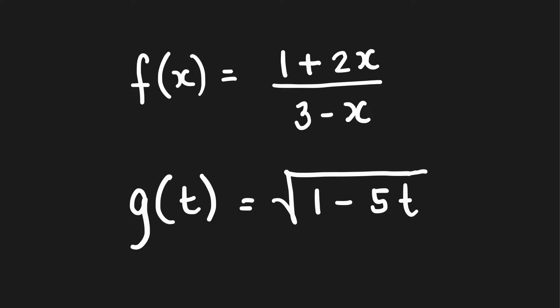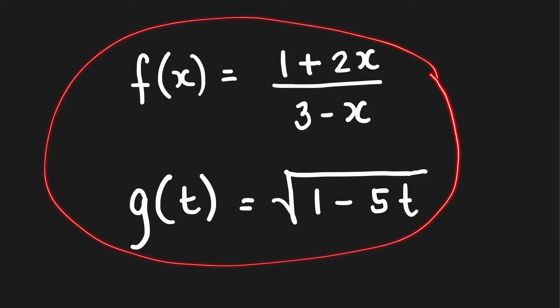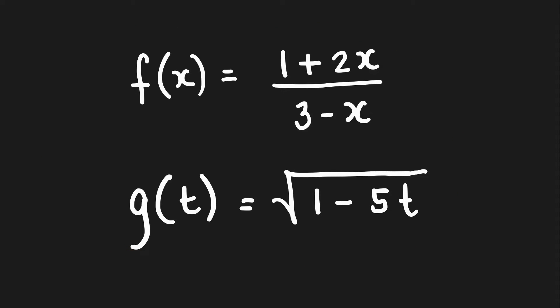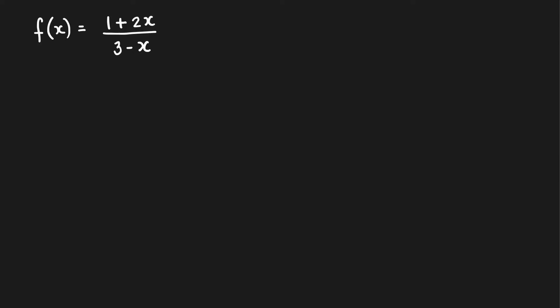In this video, I'm going to show you how to compute for the derivative of these two functions using the limit definition of the derivative. Let's get started. If we look at this function here, when we use the limit definition, our derivative f prime of x is equal to the limit of the difference quotient: f of x plus h minus f of x over h, as h approaches 0.